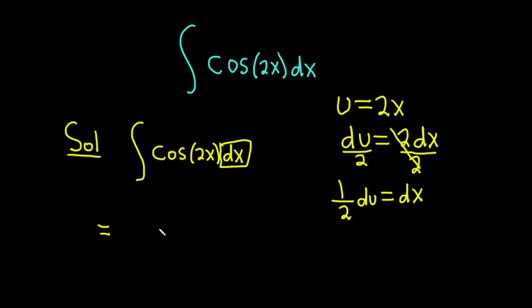So dx is 1 half du. It's 1 half. We have our integral sign and then we have our du. So the only thing that's been replaced at this point is what's in a box here which is dx which is 1 half du.